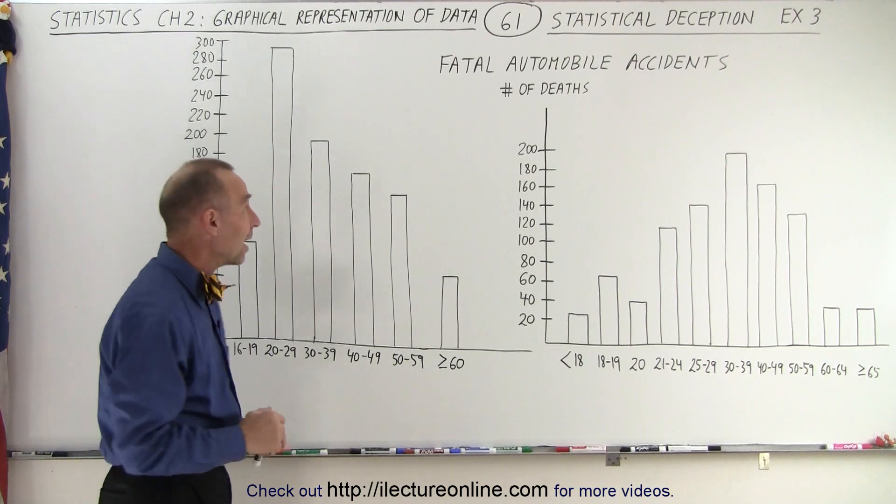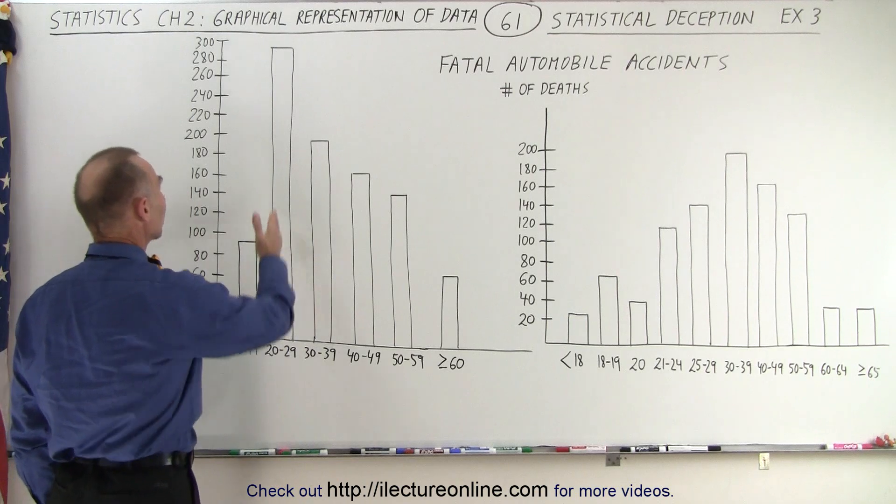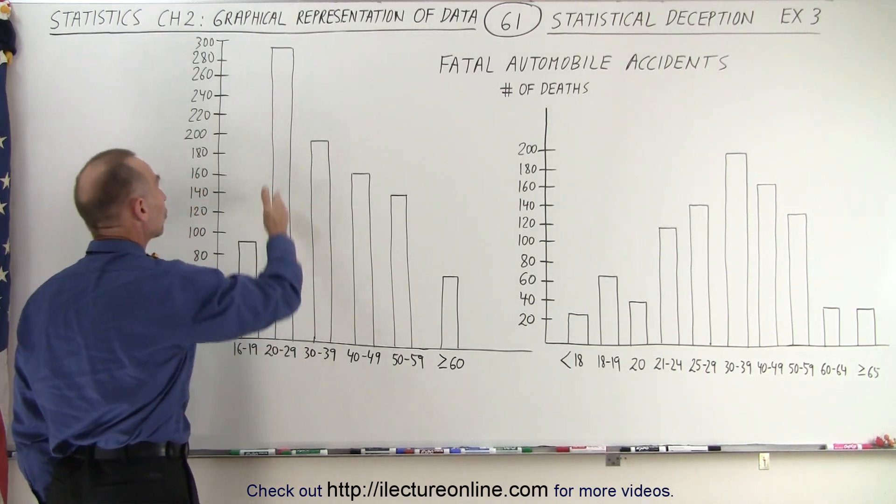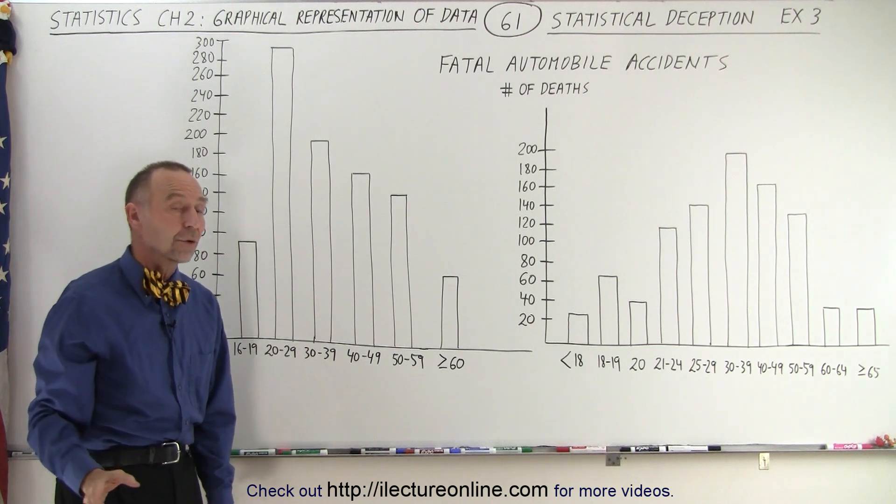Let's see what the graph looks like now. When we take a look at this graph, all of a sudden you get a very different picture. The drivers aged 20 to 29 cause way more traffic deaths than the other drivers in any other category.